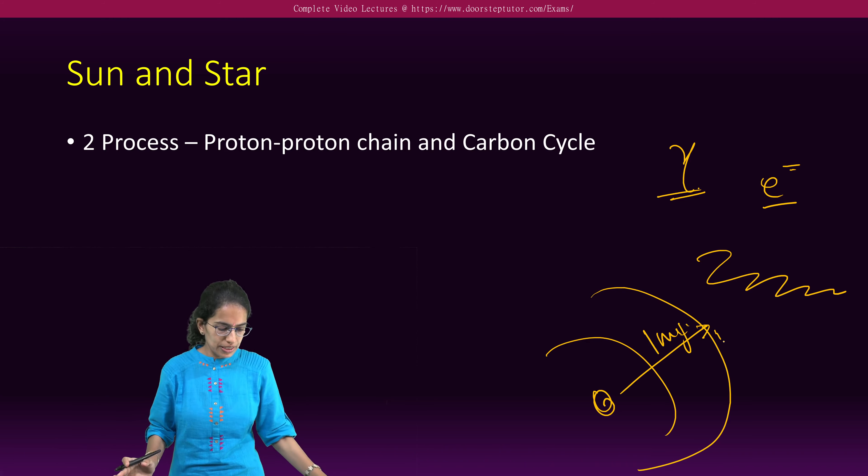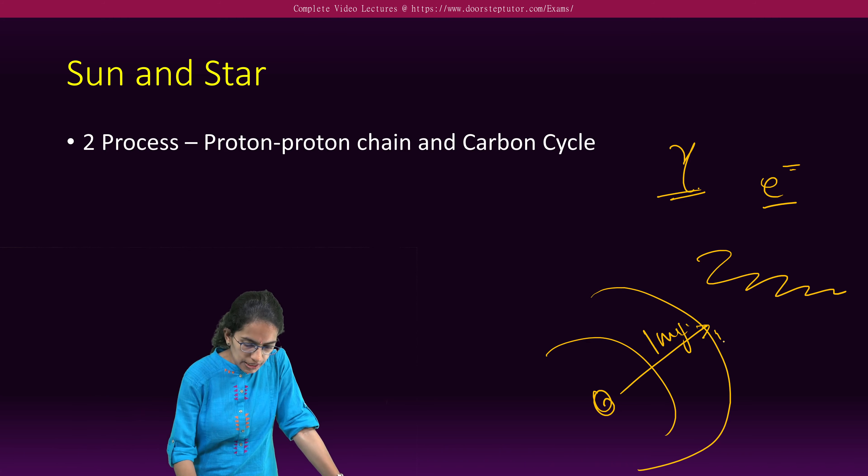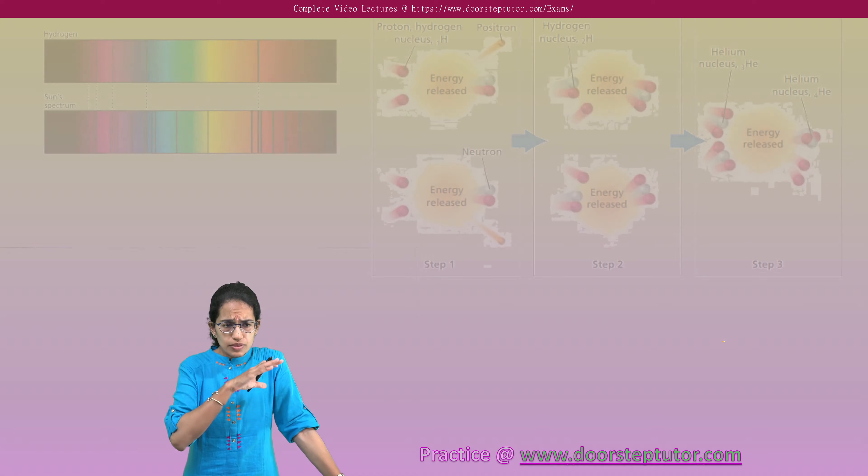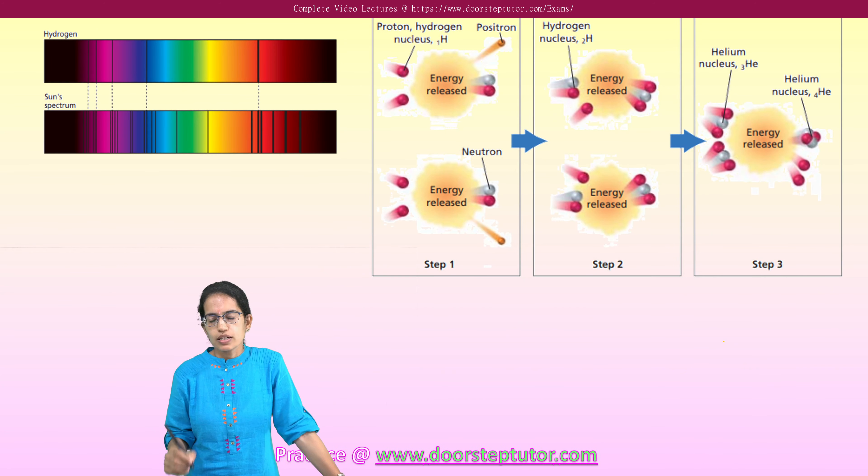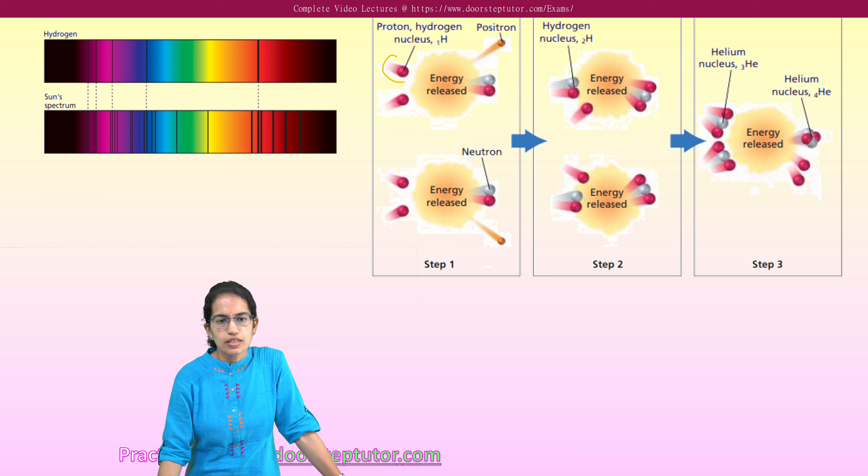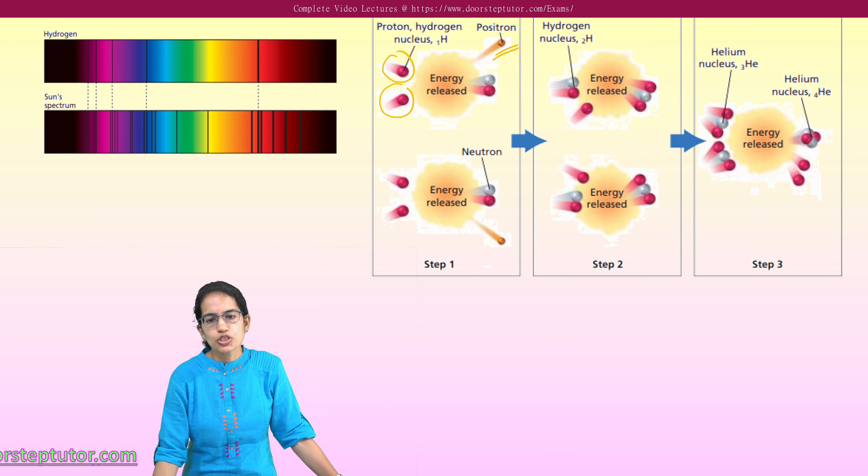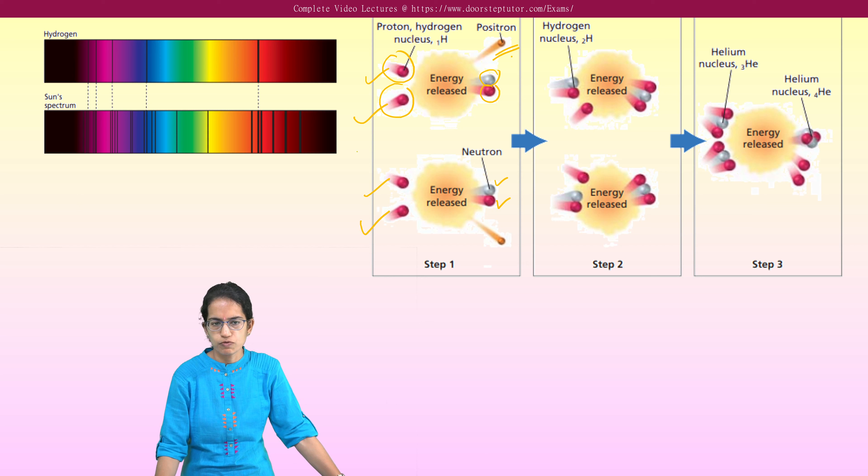Now, when we talk about sun, how does it work? The idea is very simple. In the beginning, there are two protons that combine. Positron is released and a neutron and a proton pair is formed. So this is neutron and this is proton. So four hydrogen, so one proton, one proton, one proton and one proton. So four hydrogen come together.